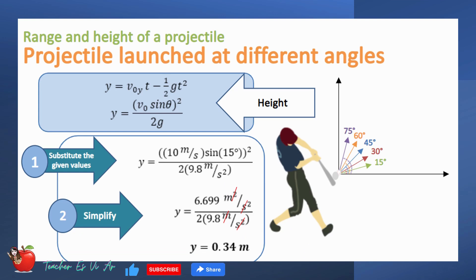We can use the equation for y given above to determine which angle will give the maximum height. Let's begin with 15 degrees. Let us substitute the given values into the equation, then simplify. The maximum height reached at 15 degrees is 0.34m. Try solving using the remaining angles.